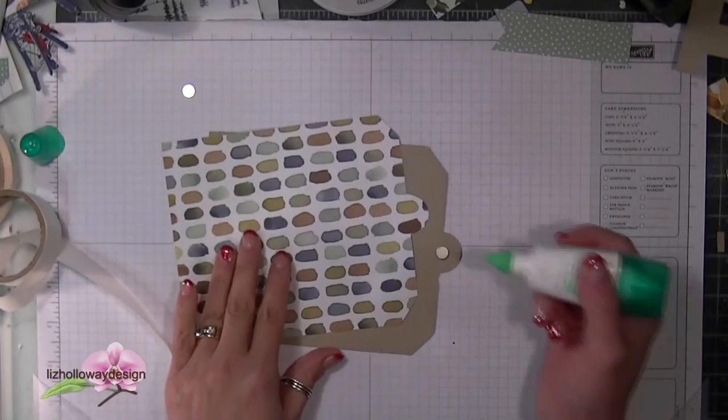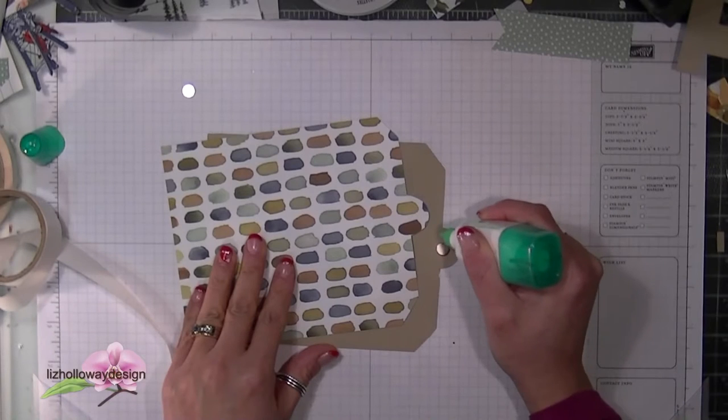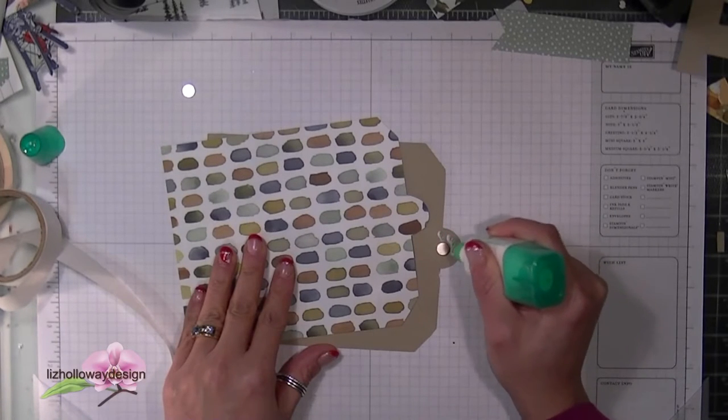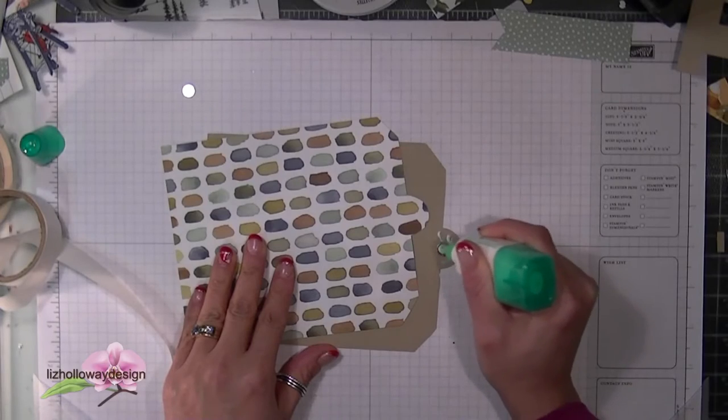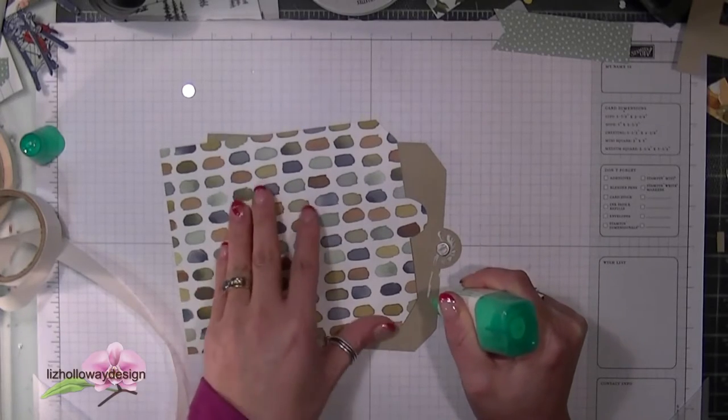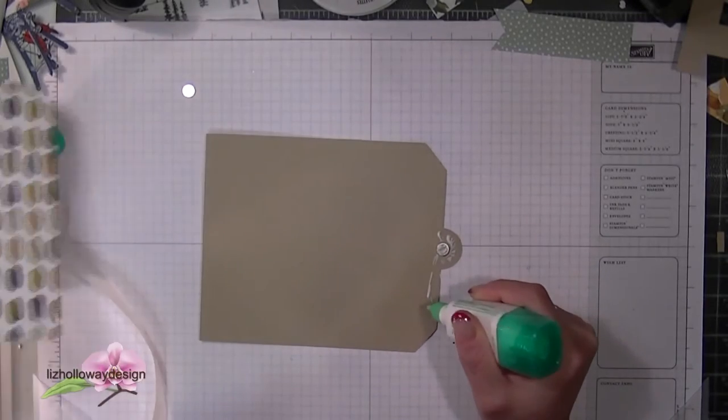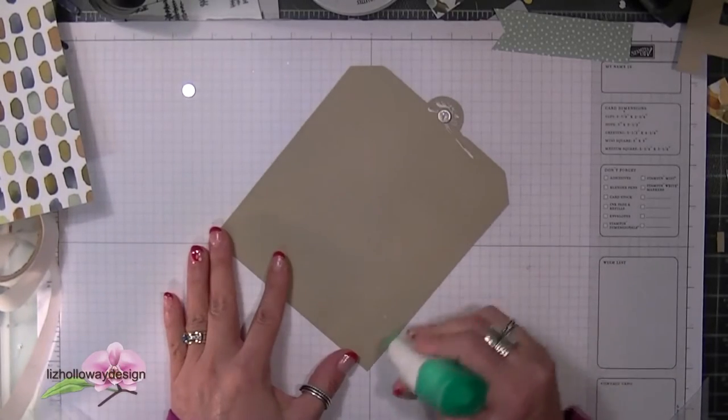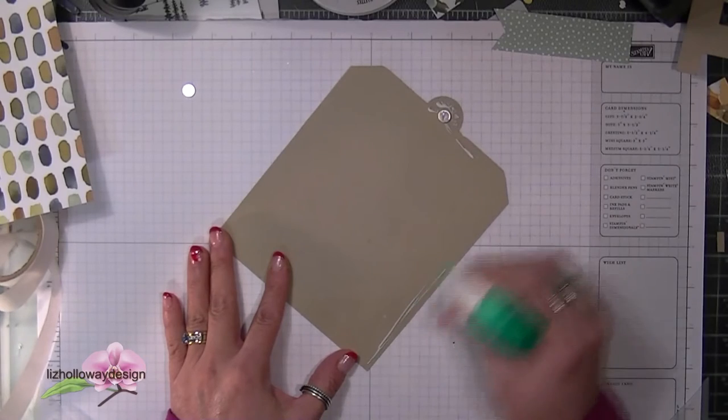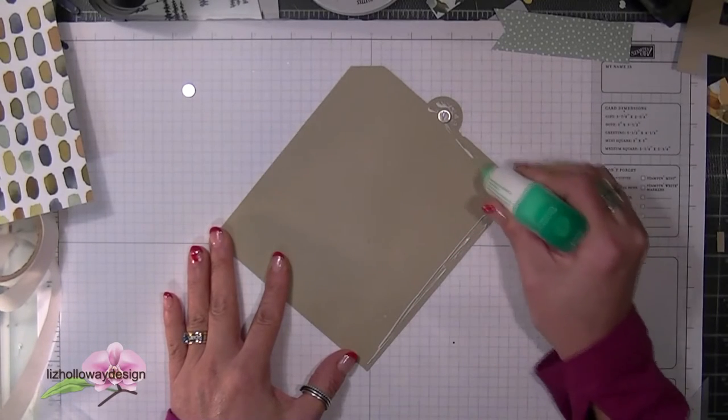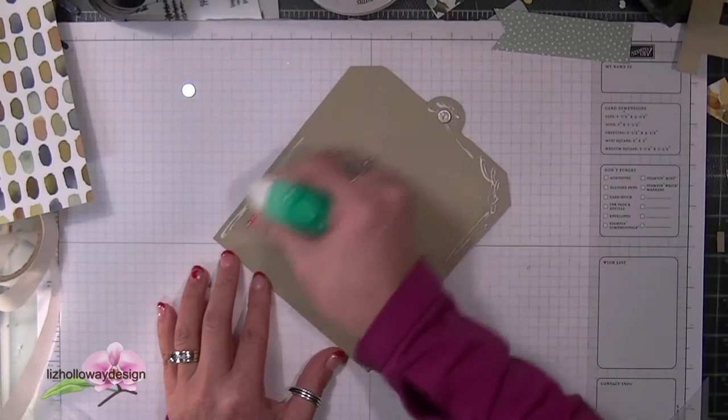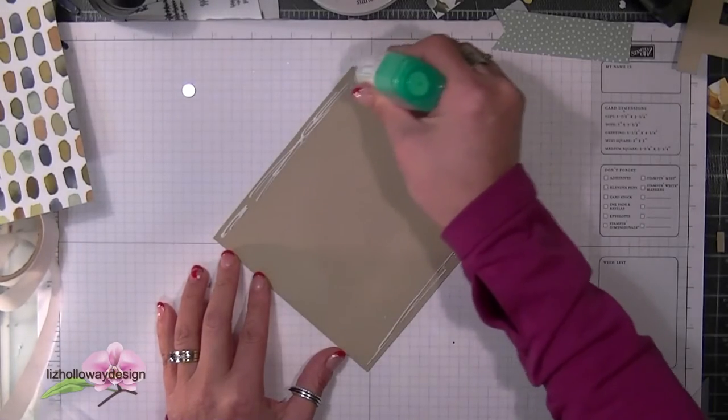Then I'm taking my multi-purpose glue and applying glue throughout the whole surface of the cardstock. I'm using multi-purpose glue because when I place the designer paper on top of it, I'm not going to have to worry about it not aligning up properly. I still have some wiggle room to move the designer paper around so that it lines perfectly with the cardstock.